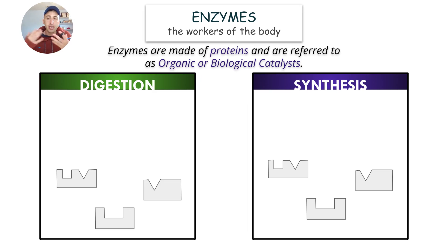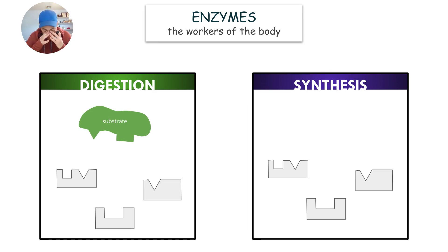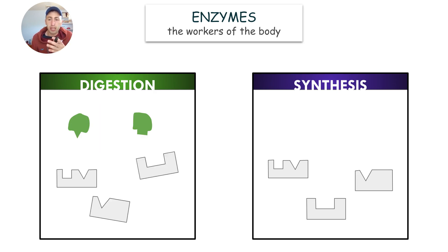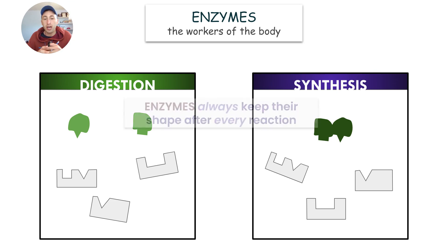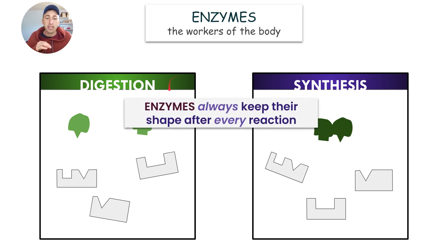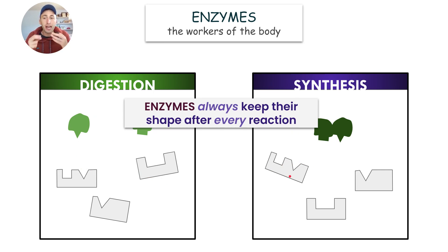In digestion, you have a substrate — like a starch molecule, a polypeptide, or a fat — and the enzymes latch onto these substrates and break them down into smaller pieces, like glucose or amino acids. In synthesis, they put things together — like amino acids to make proteins, or glucose together to make starch. After every reaction they do, enzymes always keep their shape. Each enzyme has a specific role based on its shape.